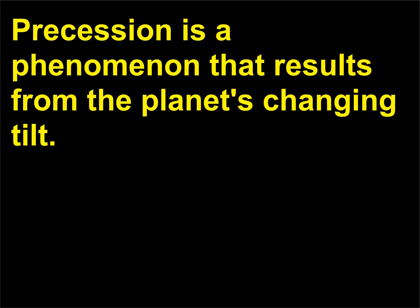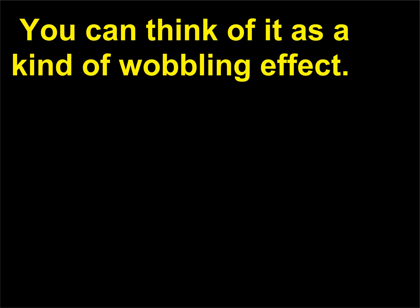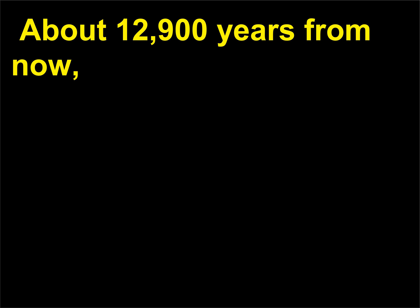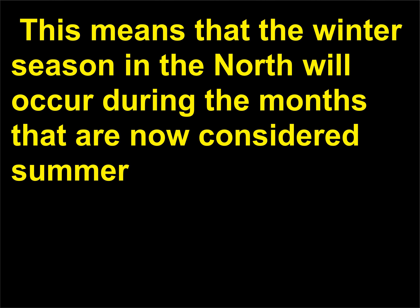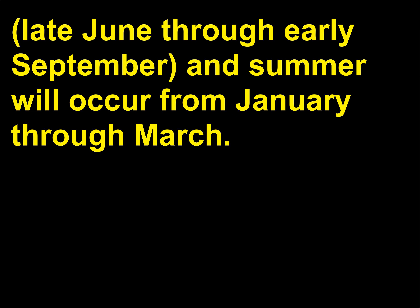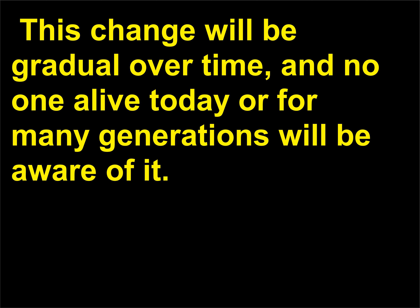What is precession? Precession is a phenomenon that results from the planet's changing tilt. You can think of it as a kind of wobbling effect. About 12,900 years from now, the North Pole will be tilted toward the sun in January and away from it in June. This means that the winter season in the North will occur during the months that are now considered summer — late June through early September — and summer will occur from January through March. This change will be gradual over time, and no one alive today or for many generations will be aware of it.